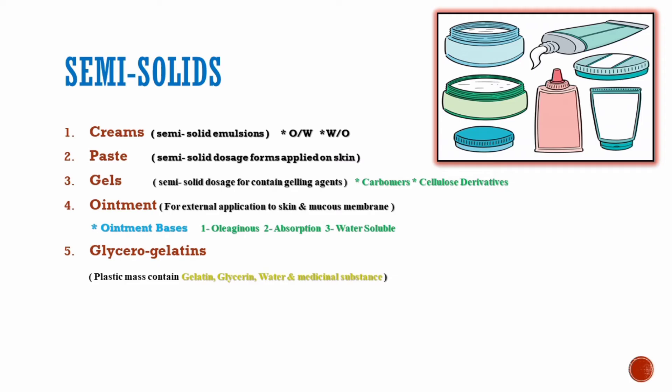Semi-solid dosage forms include creams, pastes, gels, ointments, and glycerogelatins. Creams are semi-solid emulsions which may be oil-in-water or water-in-oil emulsions. Pastes are semi-solid dosage forms that are applied on the skin. Gels are also semi-solid dosage forms which contain gelling agents like carbomers and cellulose derivatives.